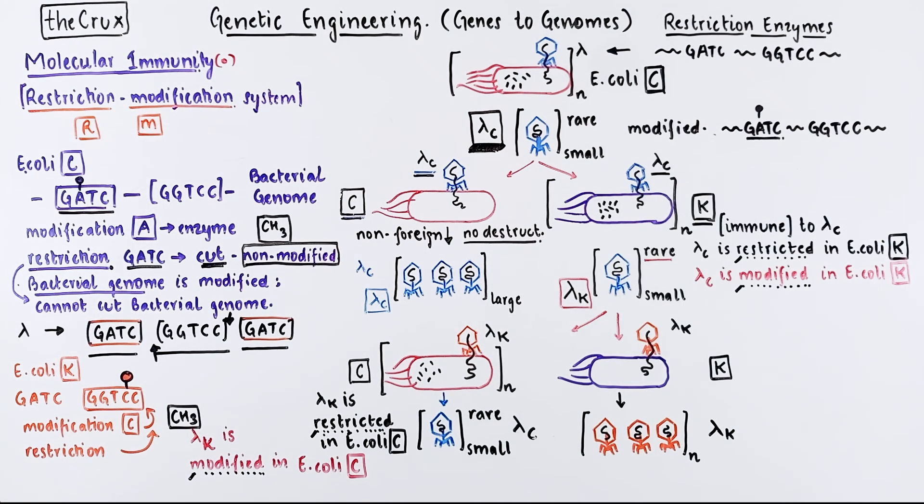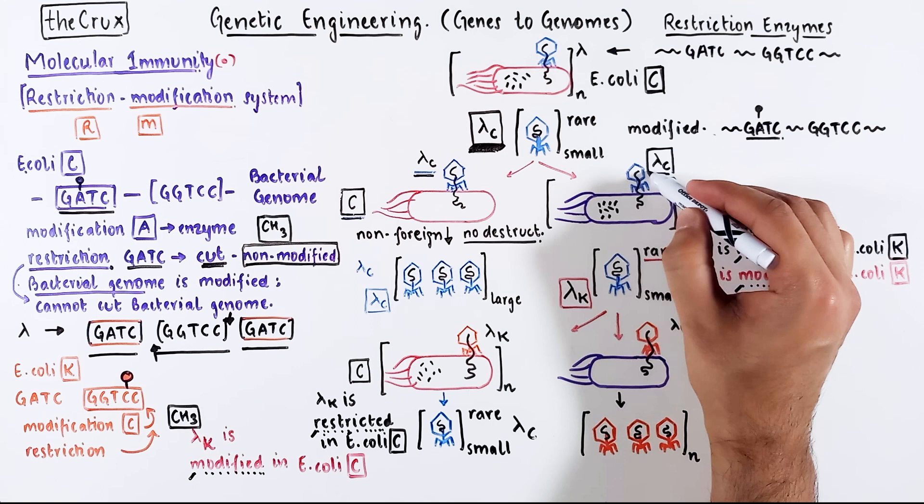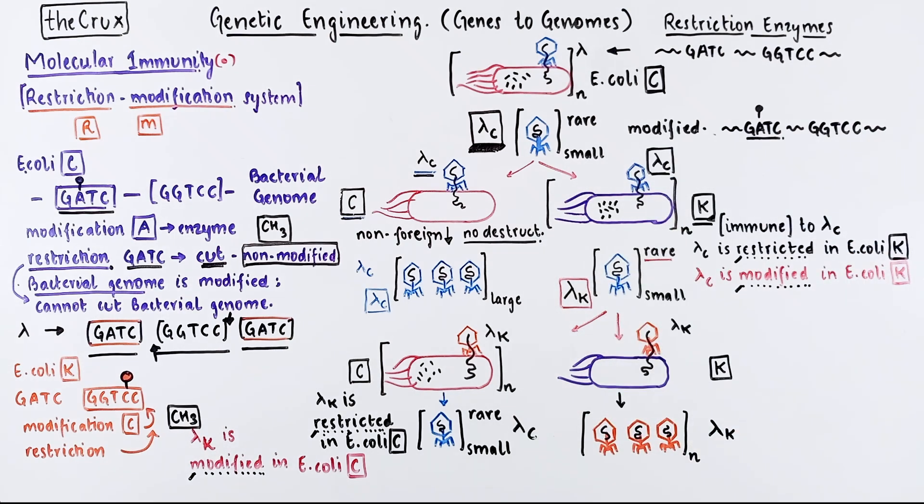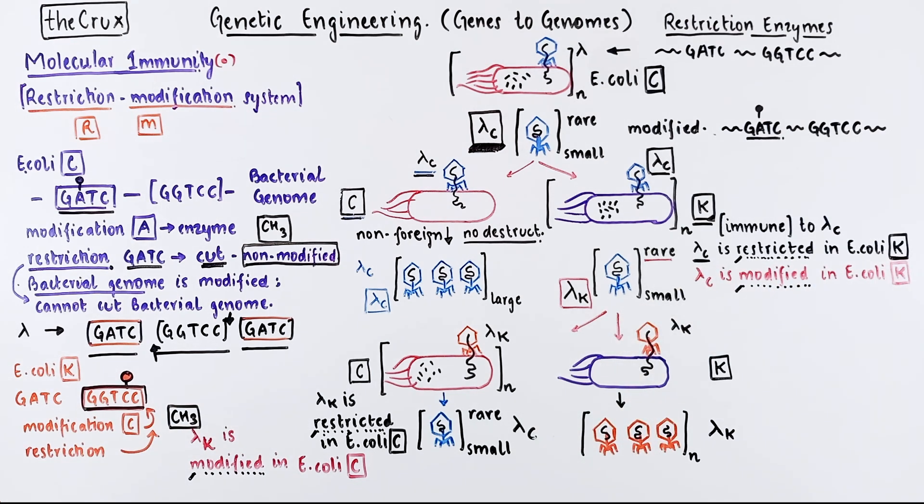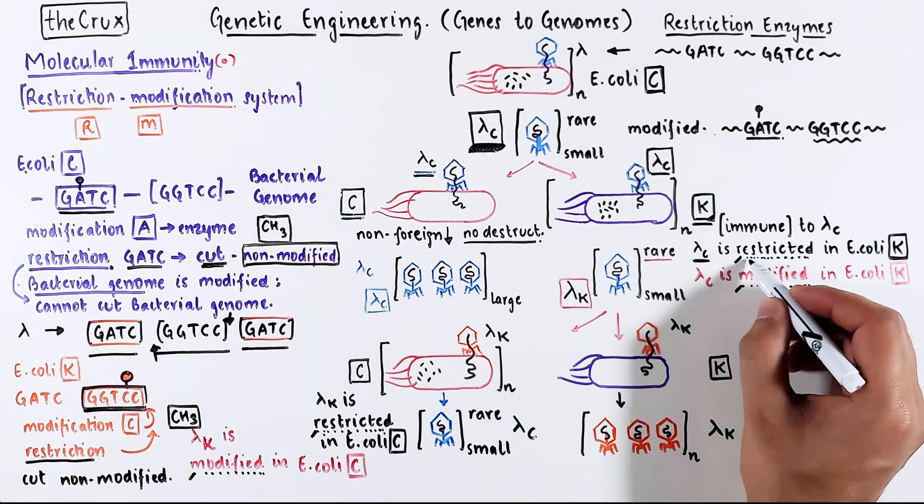The other case is more interesting because when lambda C infects E. coli K, the K strain bacteria only cares about the status of GGTCC. So lambda C gets restricted in E. coli K because GGTCC is not modified. Again, by the same rules, the restriction enzyme cuts non-modified sites. So it is restricted.